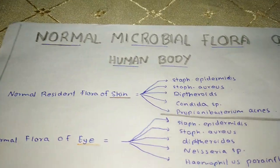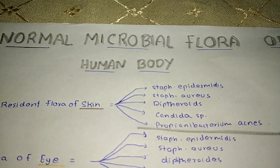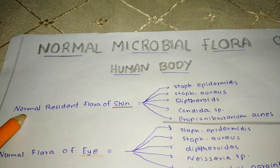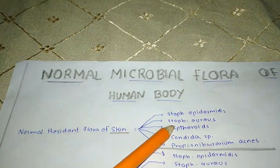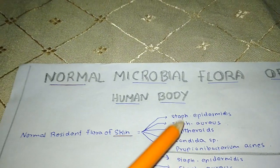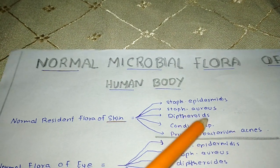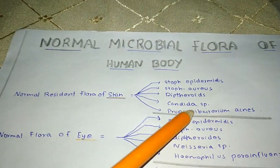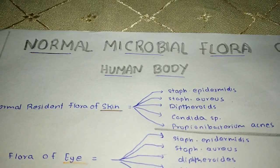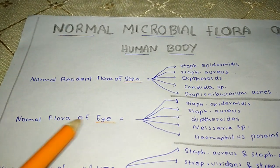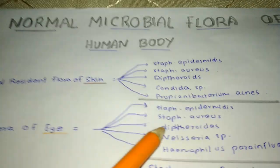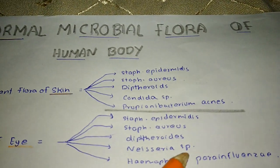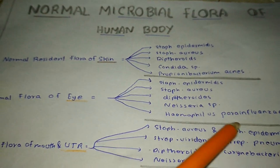Now we will learn about the bacteria present in the normal flora in different parts of the body. First, the normal resident flora of the skin includes Staphylococcus epidermidis and Staphylococcus aureus.